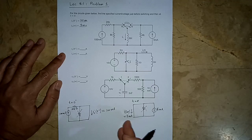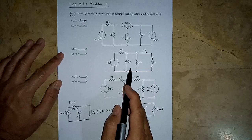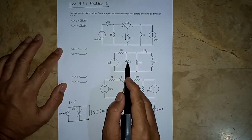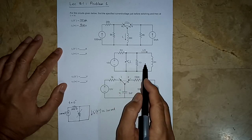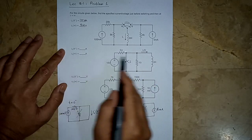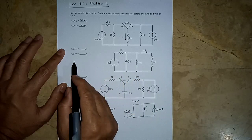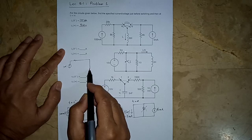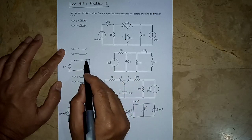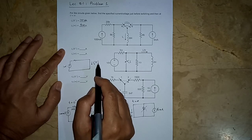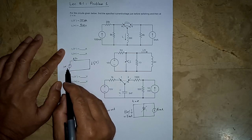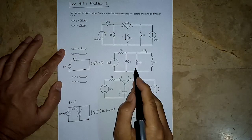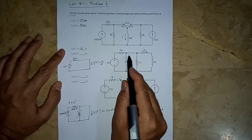Now the second circuit: before t equals zero the switch was open, and it closed at t equals zero. From the inductor's point of view, when the switch was open the circuit had a voltage source, a 5 ohm resistor, and the inductor shorted out (the 1 ohm resistor is shorted). So IL(0−) equals 10 volts divided by 5 ohms, which is 2 amperes — a very simple DC circuit.